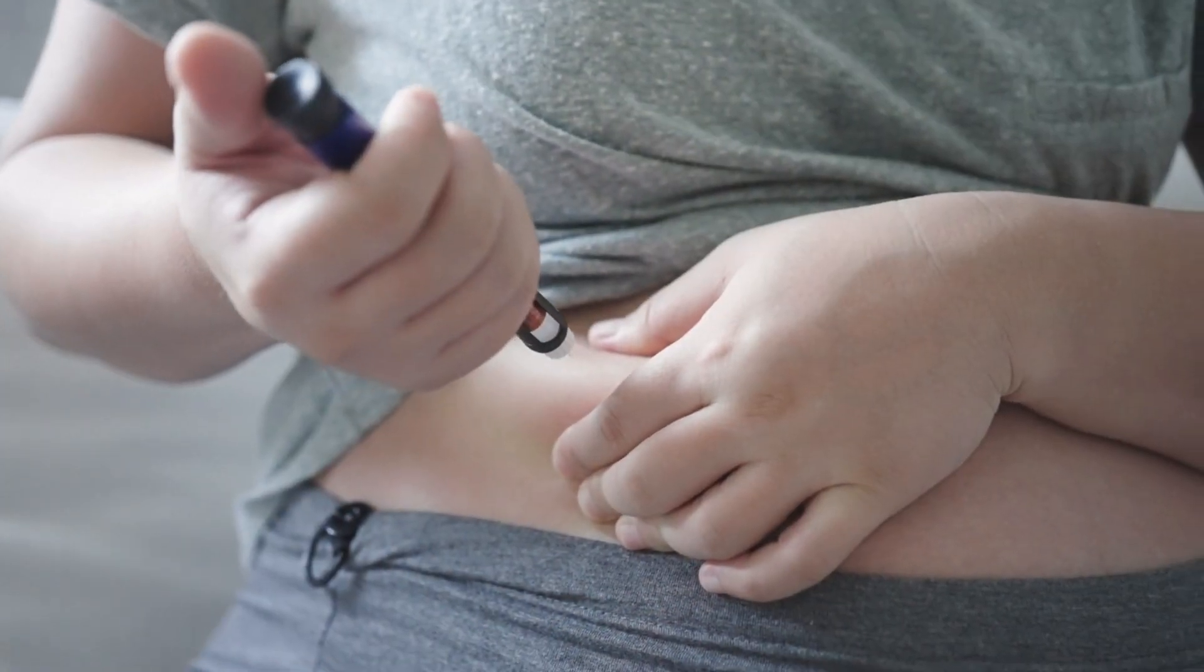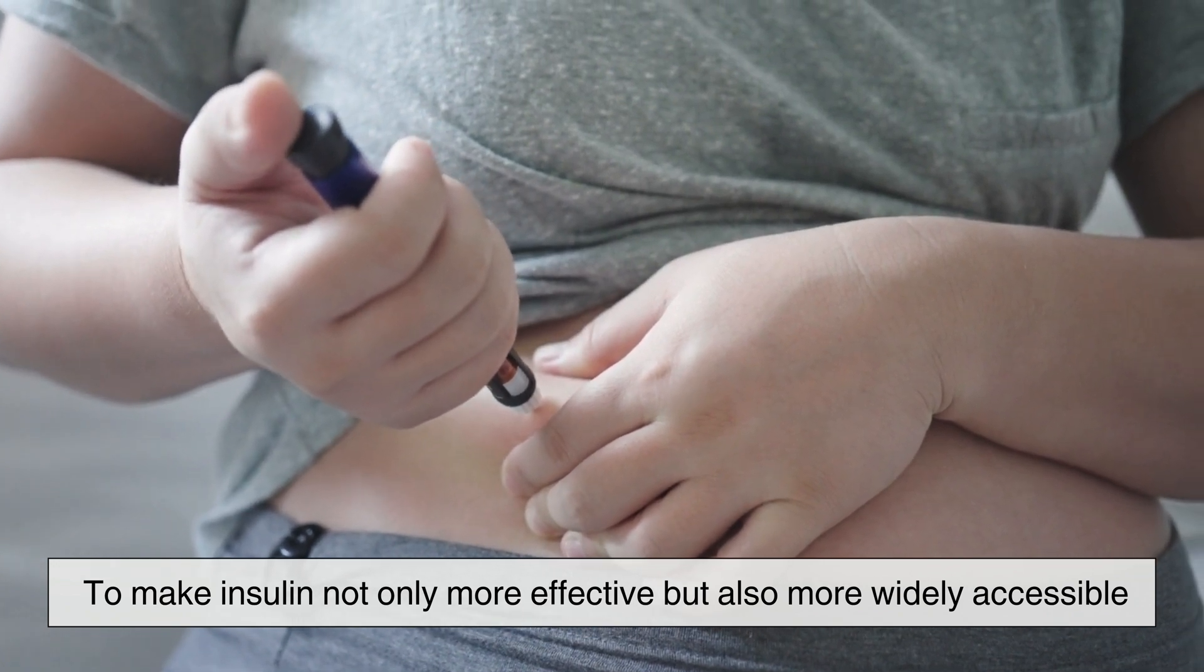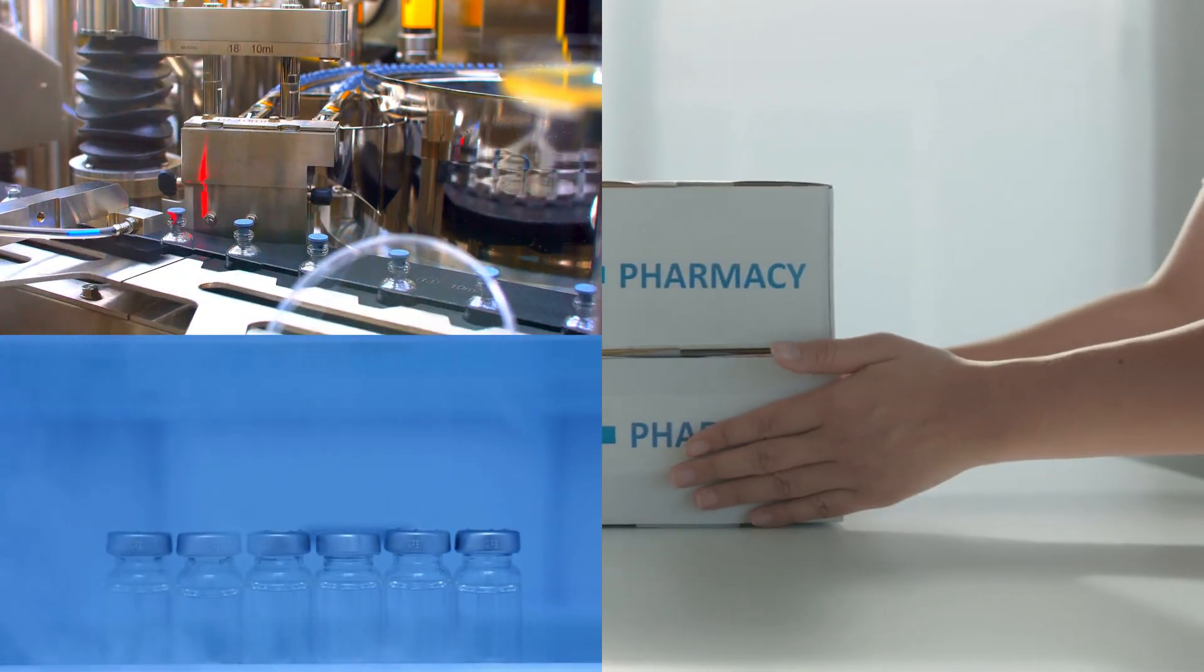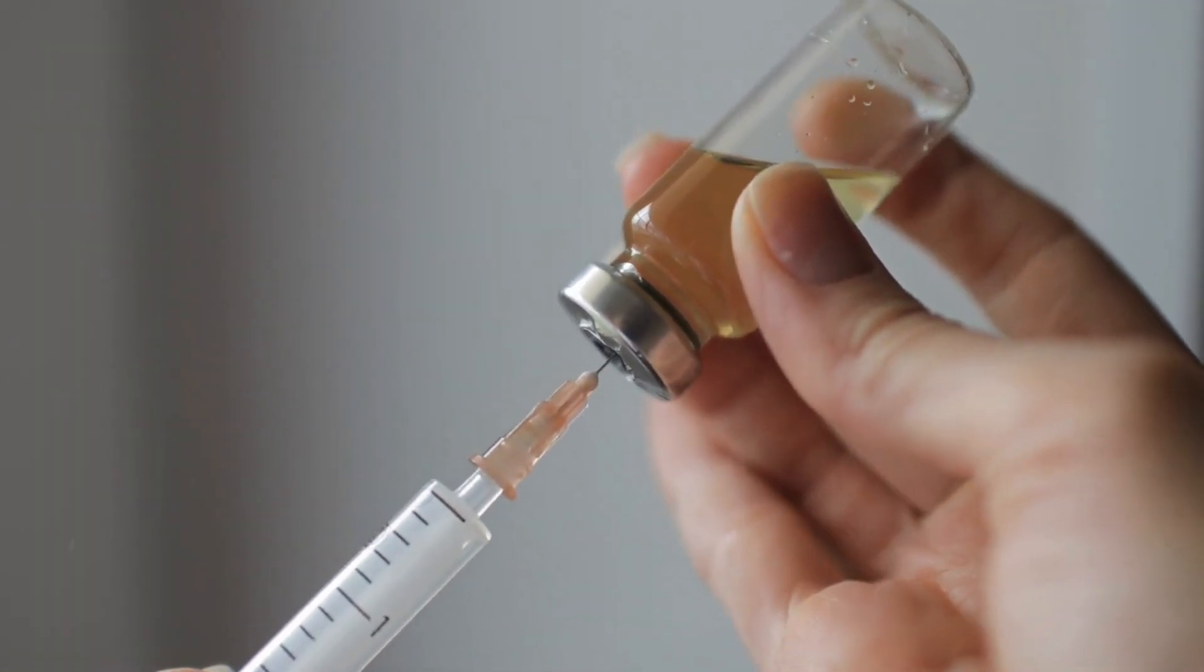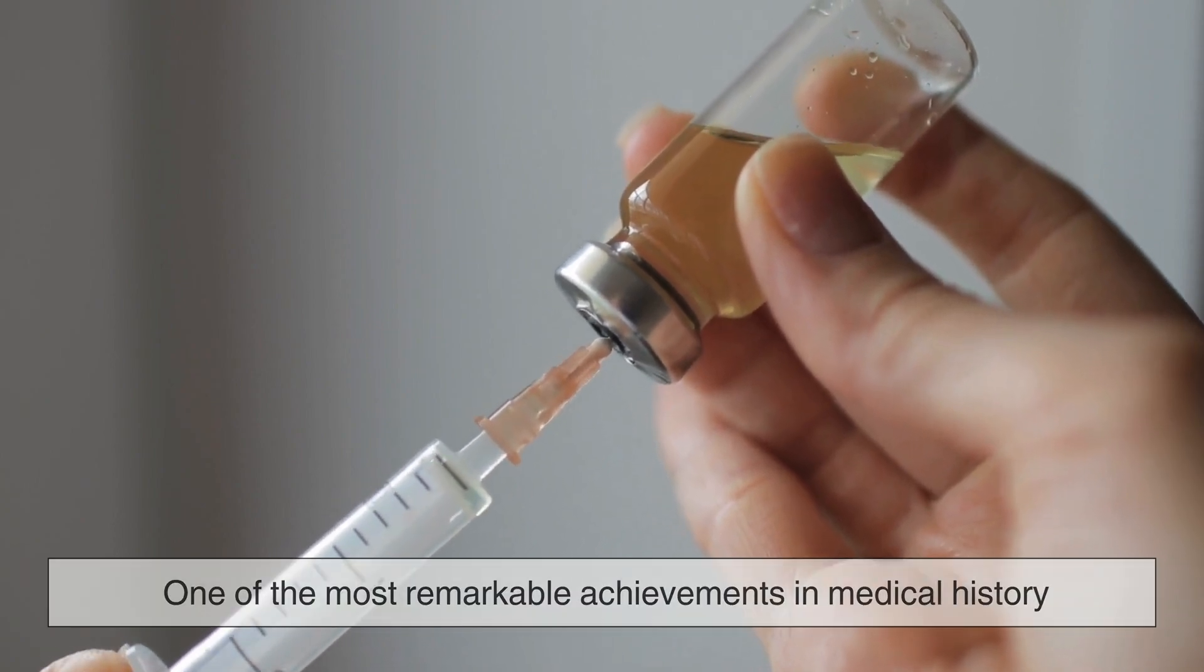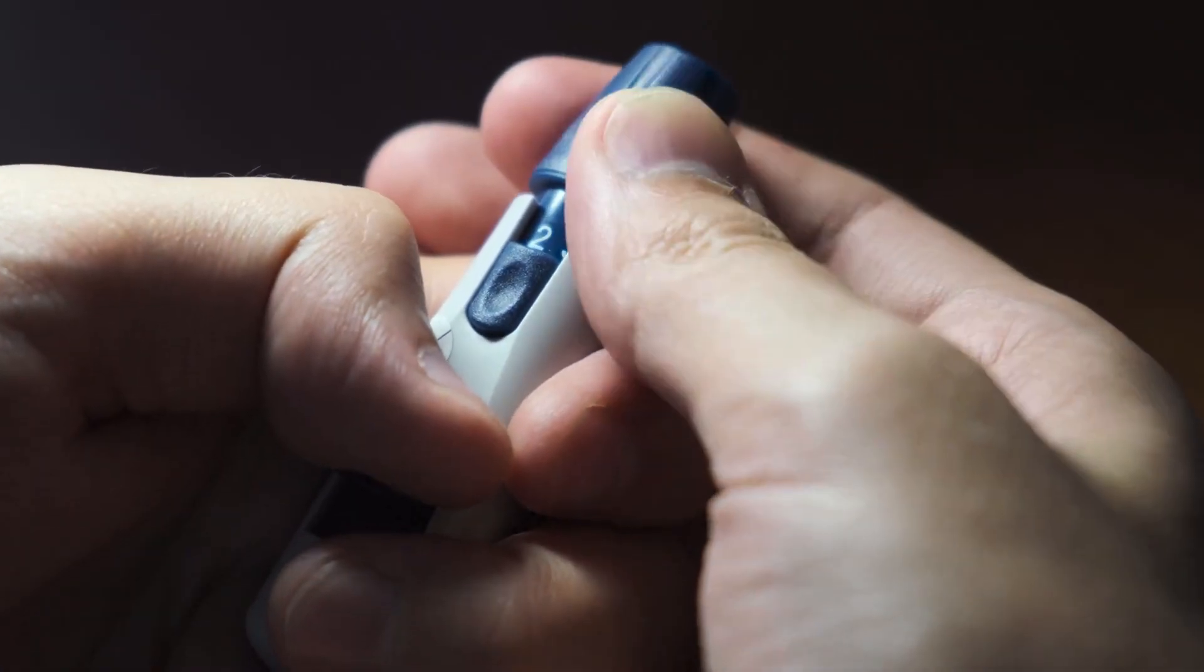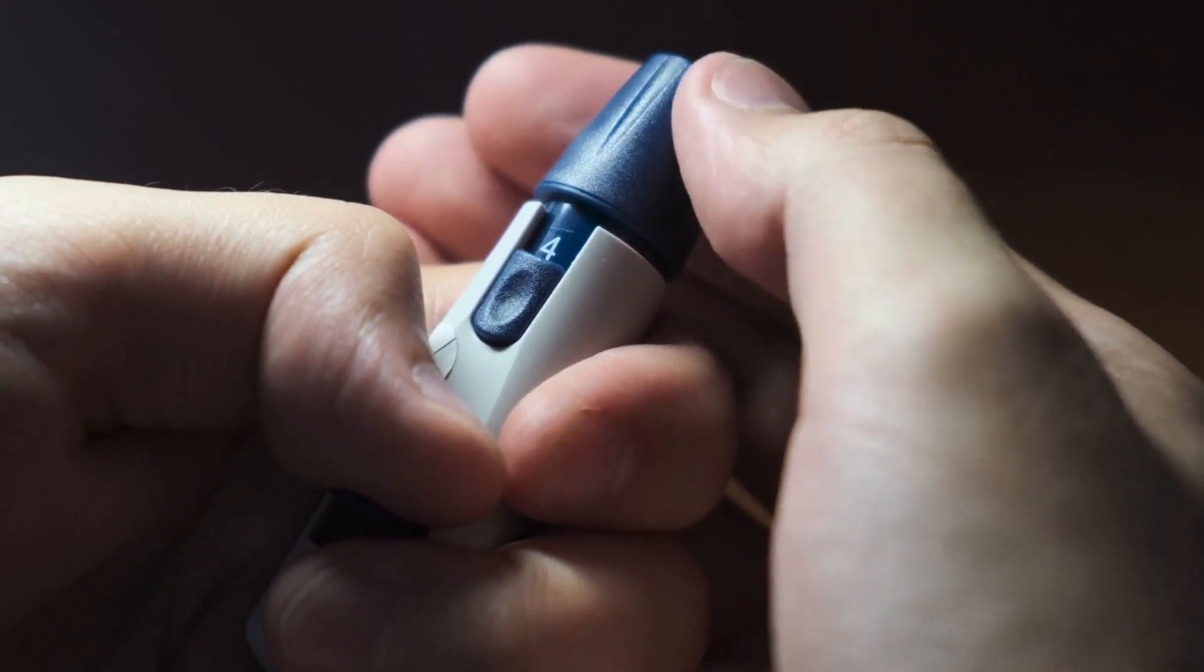As we look to the future, the goal is clear: to make insulin not only more effective but also more widely accessible. Innovations in production, improvements in storage, and new delivery methods could transform diabetes care in ways we have yet to imagine. But for now, the journey of insulin, from a single strand of DNA in a laboratory to a life-sustaining injection, is one of the most remarkable achievements in medical history. It is a testament to the relentless pursuit of progress and the unwavering commitment to improving human lives.